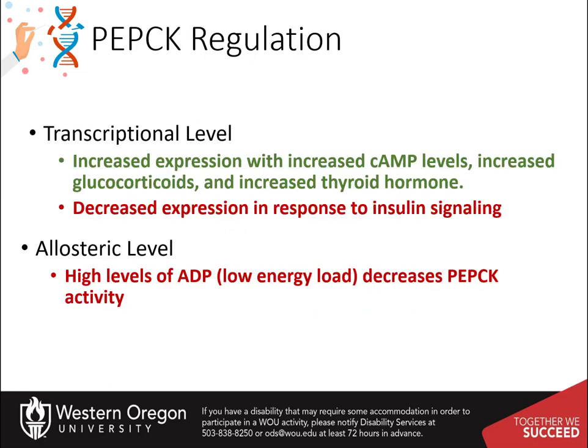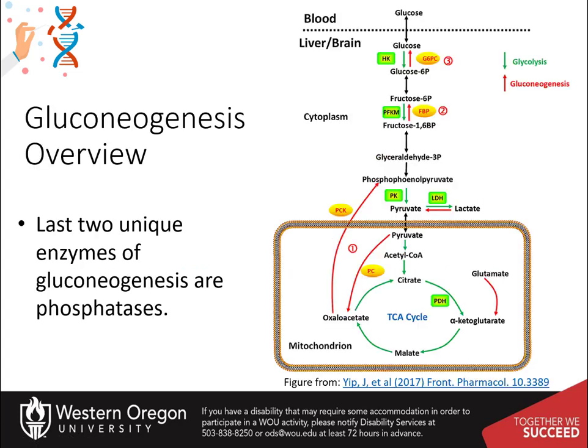Cytoplasmic phosphoenolpyruvate carboxykinase is largely regulated at the transcriptional level, where increases in gene expression are seen in response to elevated cyclic AMP levels, increased glucocorticoids, and increased thyroid hormone levels. Decreased gene expression is caused by insulin signaling. ADP also acts as an allosteric effector of the protein, causing it to have lower activity.